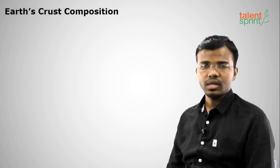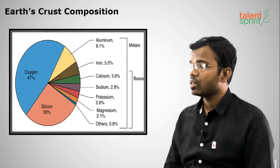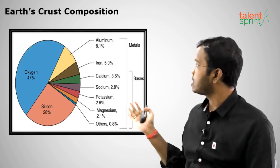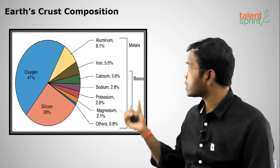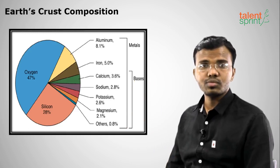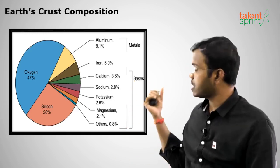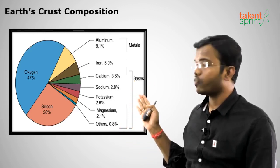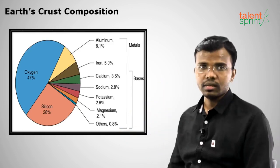In the Earth's crust, the highest composition is oxygen at around 47 percent, followed by silicon, then aluminium, then iron. These first four are very important. Next come calcium, sodium, potassium, and magnesium. Remember: the top four elements in Earth's crust are oxygen (47%), silicon, aluminium, and iron — these are very frequently asked exam questions.